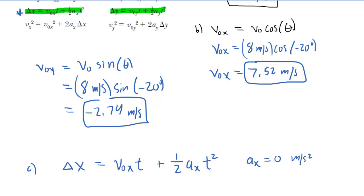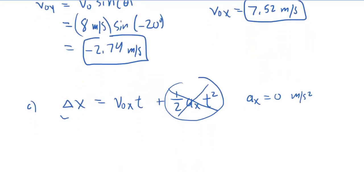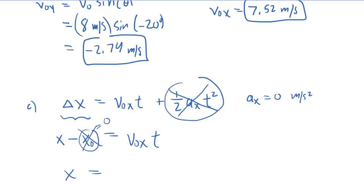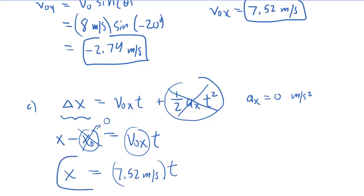Delta x can be expanded into x minus x-naught, which equals the initial velocity in the x-direction times time. Since there is no acceleration, that term disappears. x-naught, the initial x-coordinate, was zero from part A, so that also drops out of the equation. We are left with x equals the initial velocity in the x-direction, which was 7.52 meters per second, multiplied by time. This is the correct answer for the position as a function of time in the horizontal or x-direction.